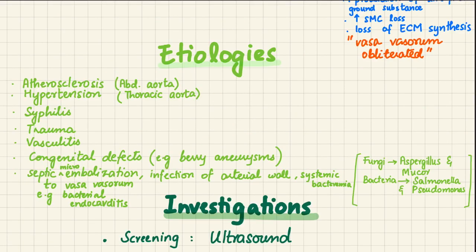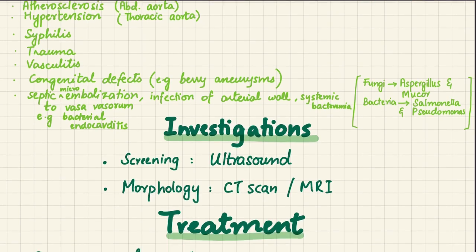The various etiologies of aneurysms include: atherosclerosis (chiefly in the abdominal aorta), hypertension (chiefly in the thoracic aorta), syphilis, trauma, vasculitis, congenital defects such as berry aneurysms in the cerebral vessels, and septic microembolization of the vasa vasorum. Bacterial endocarditis can cause septic microembolization to the vasa vasorum, leading to obliterative endarteritis and medial ischemia. Fungi involved include Aspergillus and Mucor; bacteria include Salmonella and Pseudomonas.